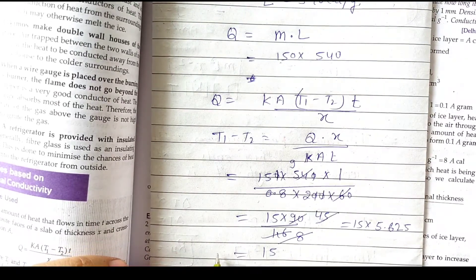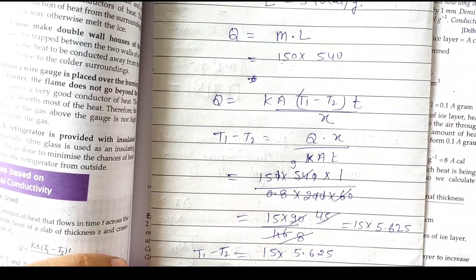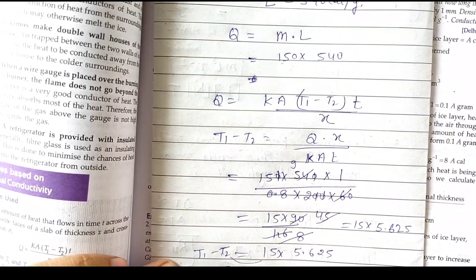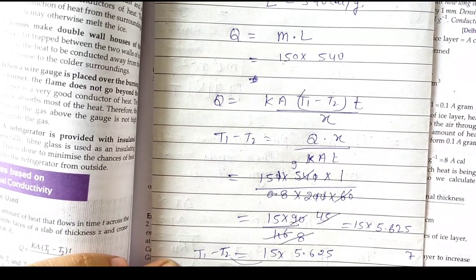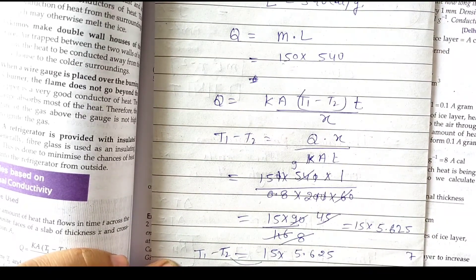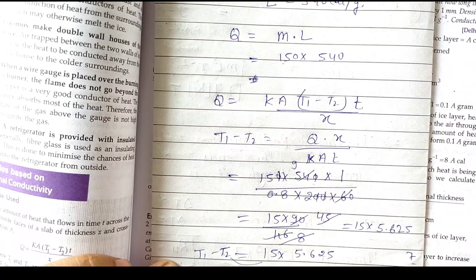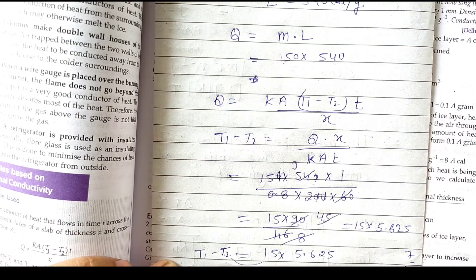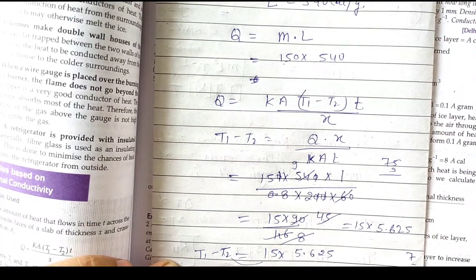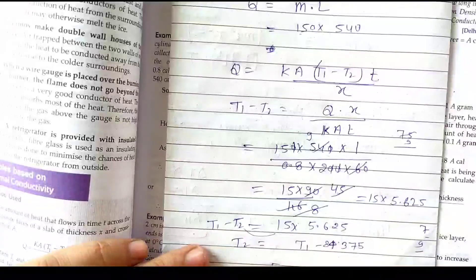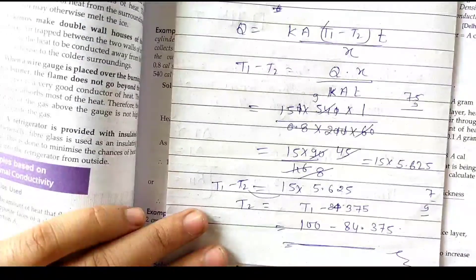Solving the calculation, T1 minus T2 comes out to approximately 84.375. Since T1 is 100°C, T2 equals 100 minus 84.375, giving the temperature of the outer surface as approximately 15.6°C.